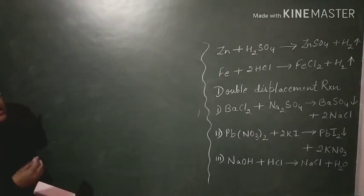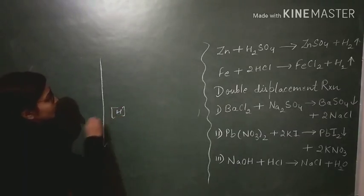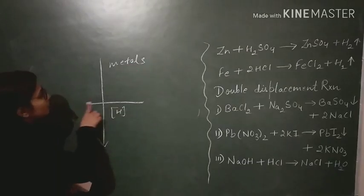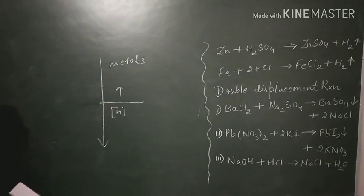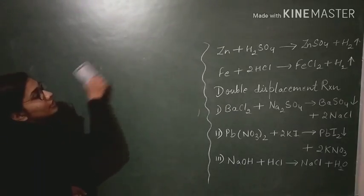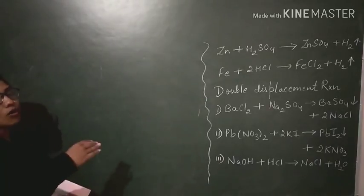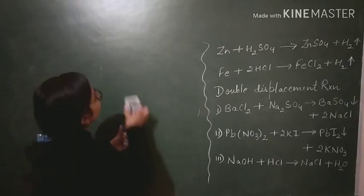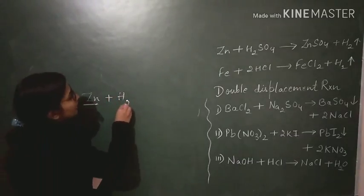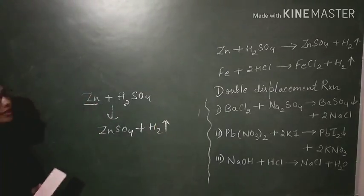Now, in the activity series, hydrogen appears in between the metals. The metals which are present above hydrogen in the activity series can displace hydrogen from dilute acid solutions. For example, zinc (Zn) is present above hydrogen, so Zn can replace hydrogen from H2SO4, forming ZnSO4 plus H2.